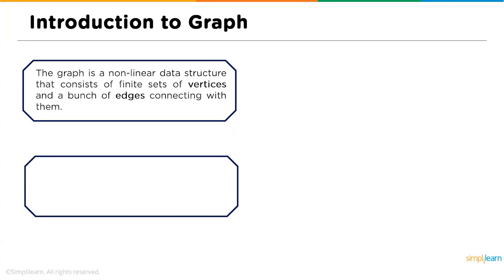So what exactly is a graph? A graph is a data structure like any other data structure — for example, linked lists, arrays, etc. A graph is a little different from those other types of data structures. Linked lists and arrays are linear data structures, whereas a graph is a non-linear data structure that consists of a finite set of vertices and a bunch of edges connecting them.